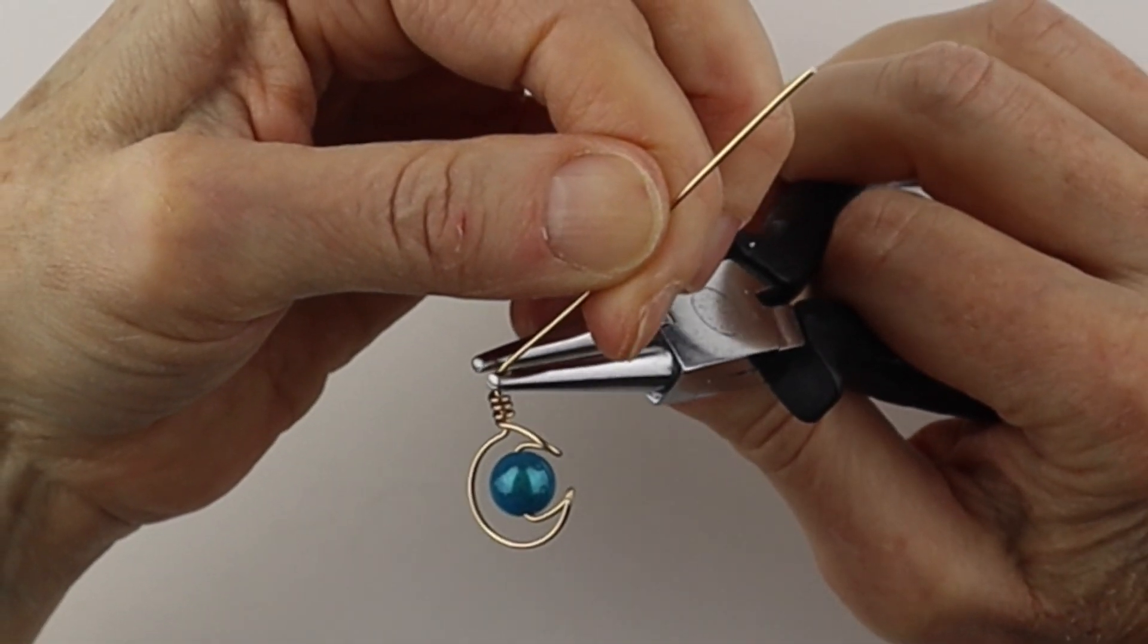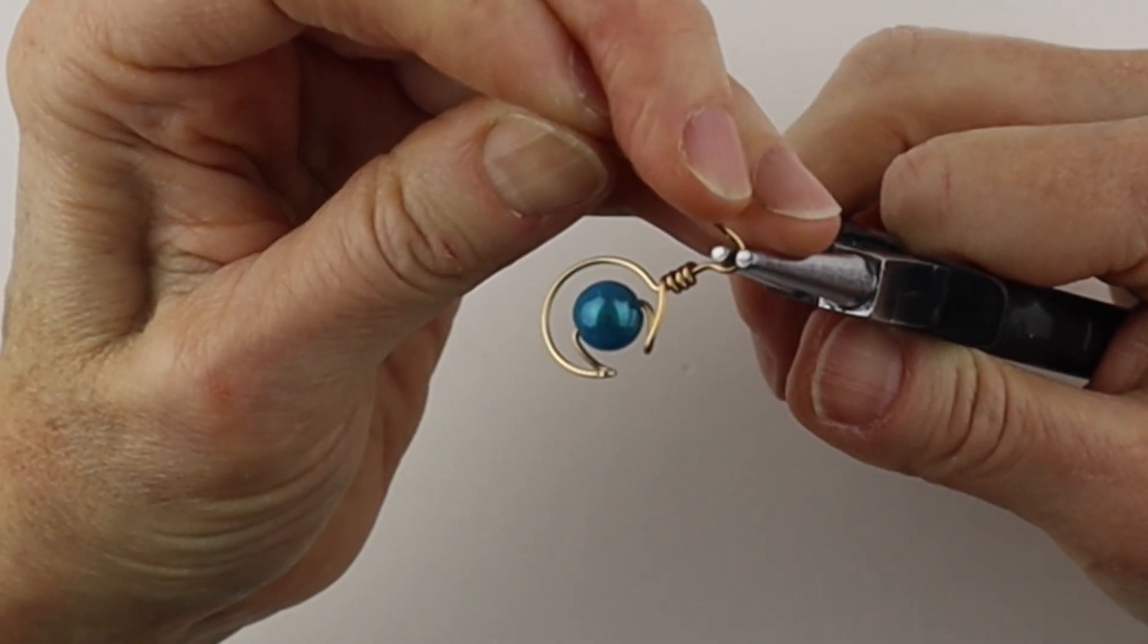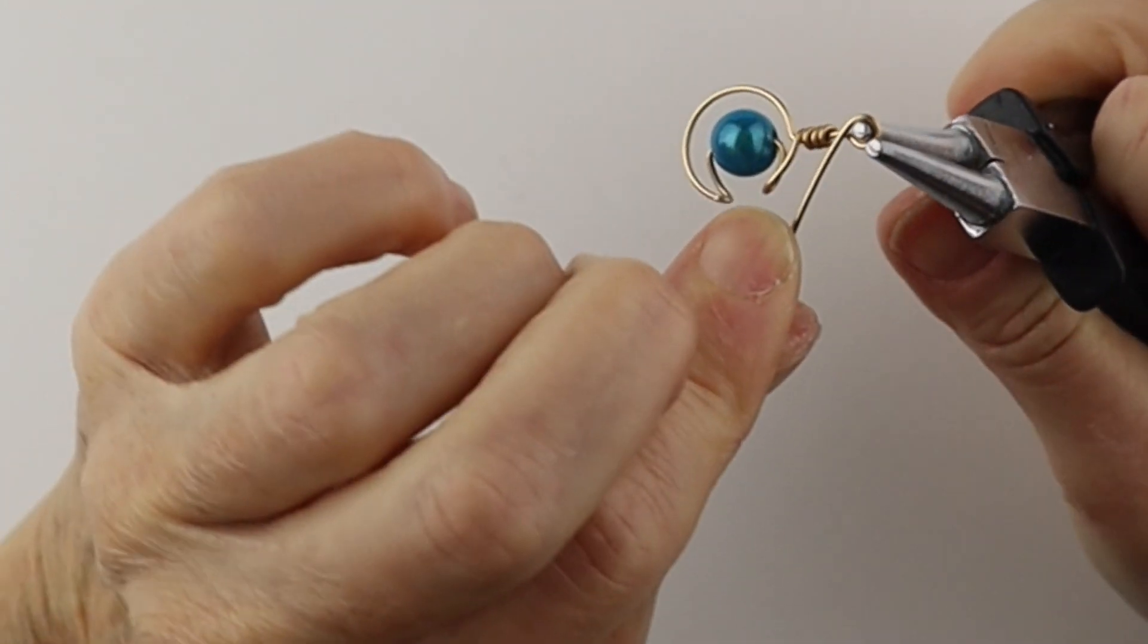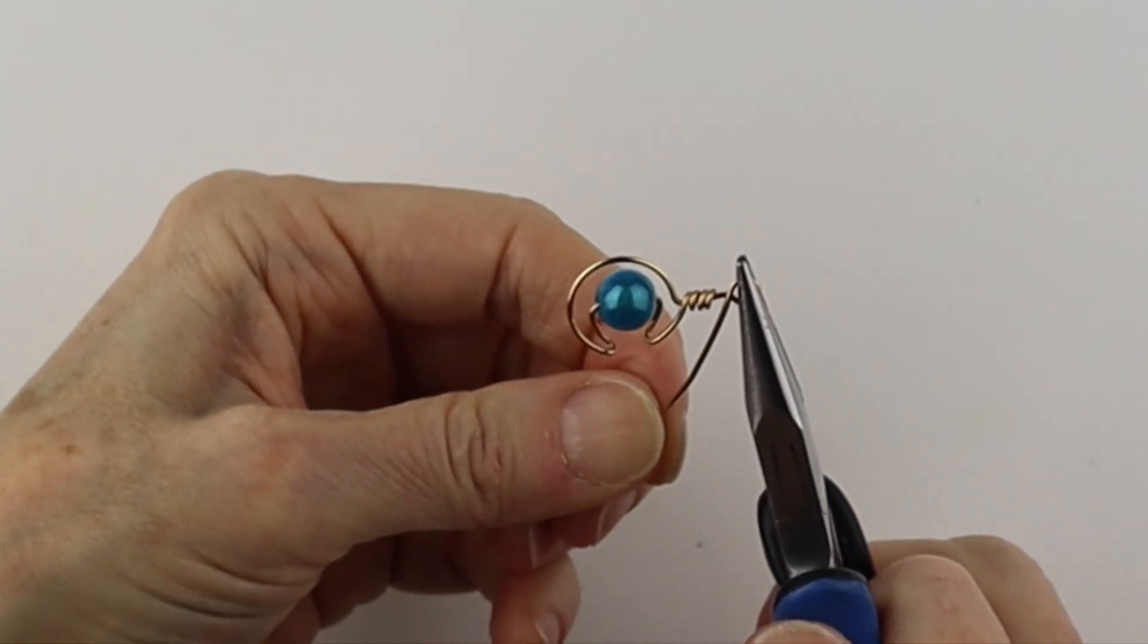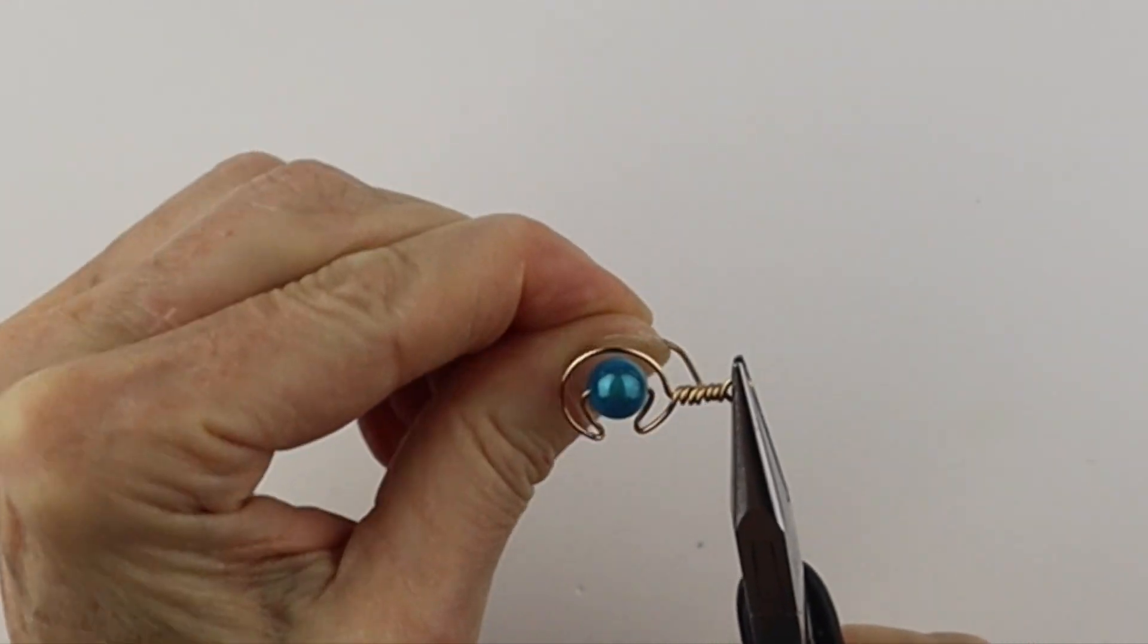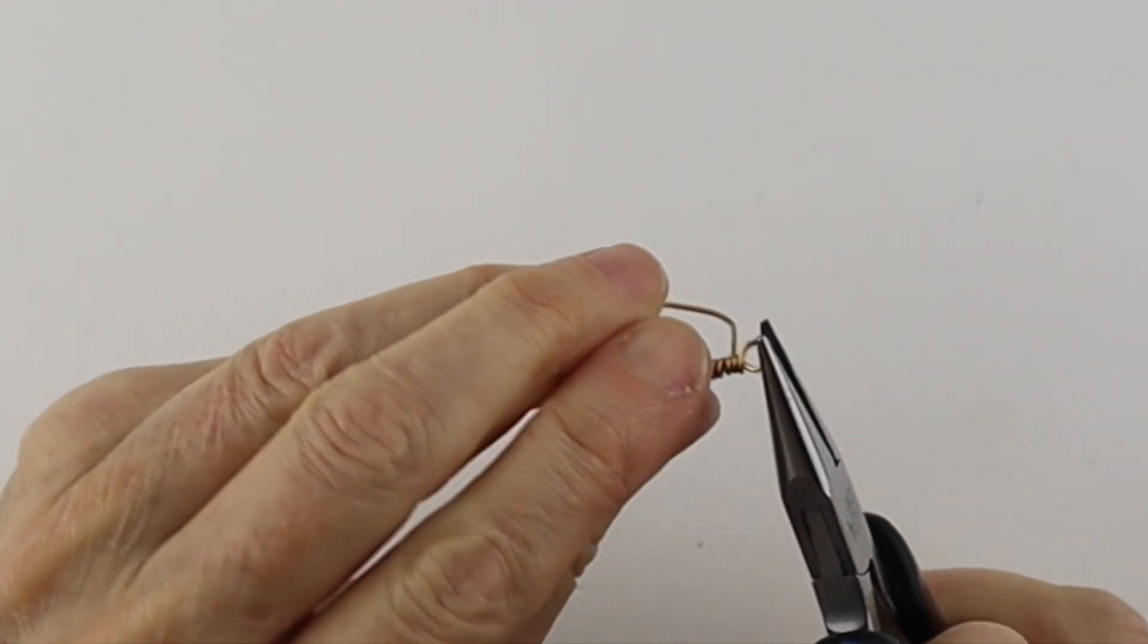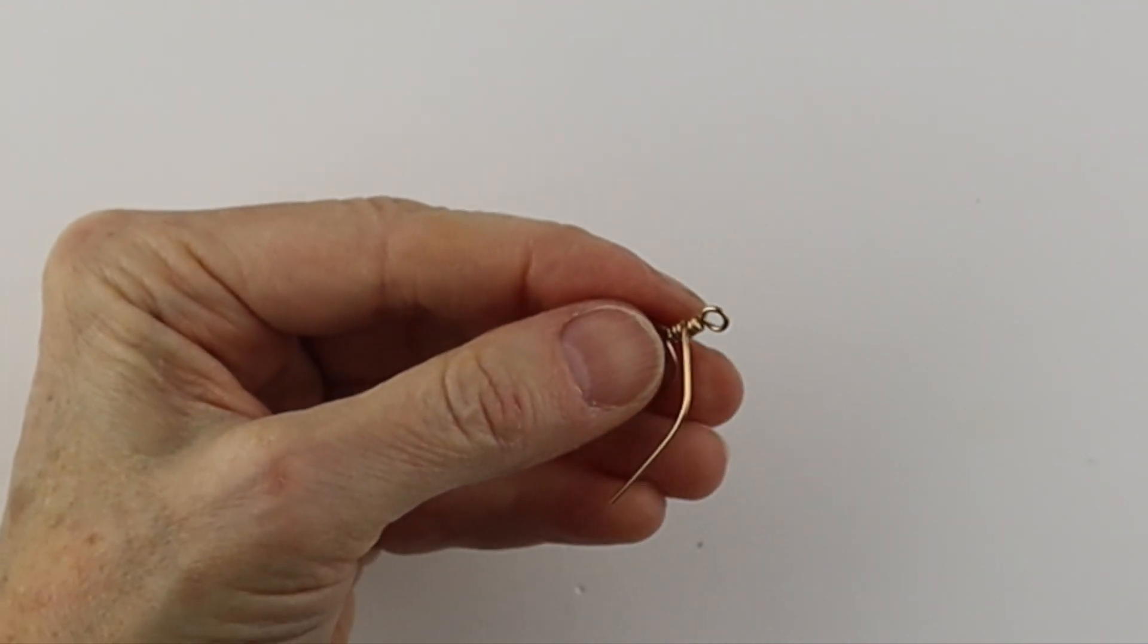And then get our round pliers, bring it around to form our loop, hold this with the flat pliers, and then bring it around. One, two, and you can go a third time. So this is coming around the opposite way. So they're going to meet up there at the back.